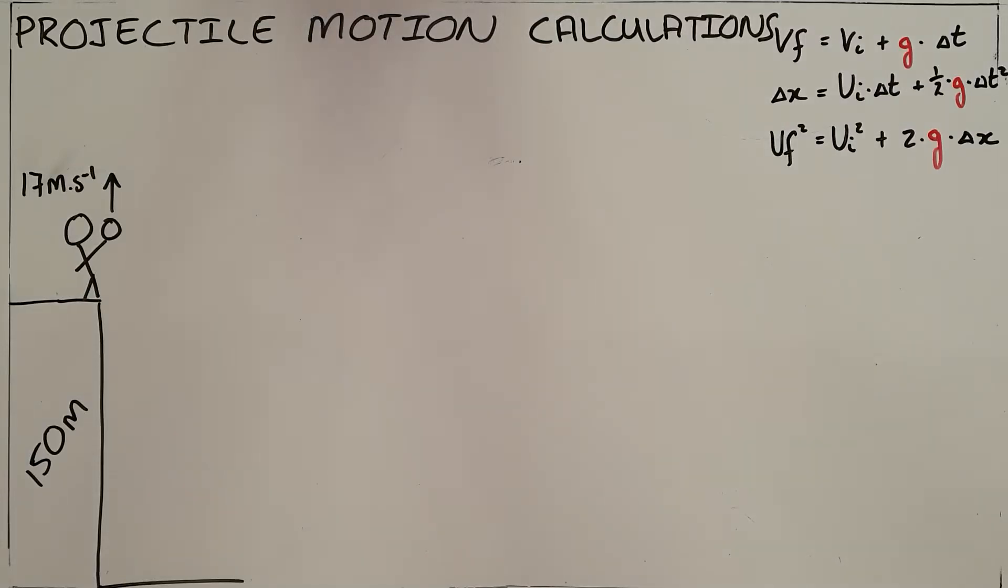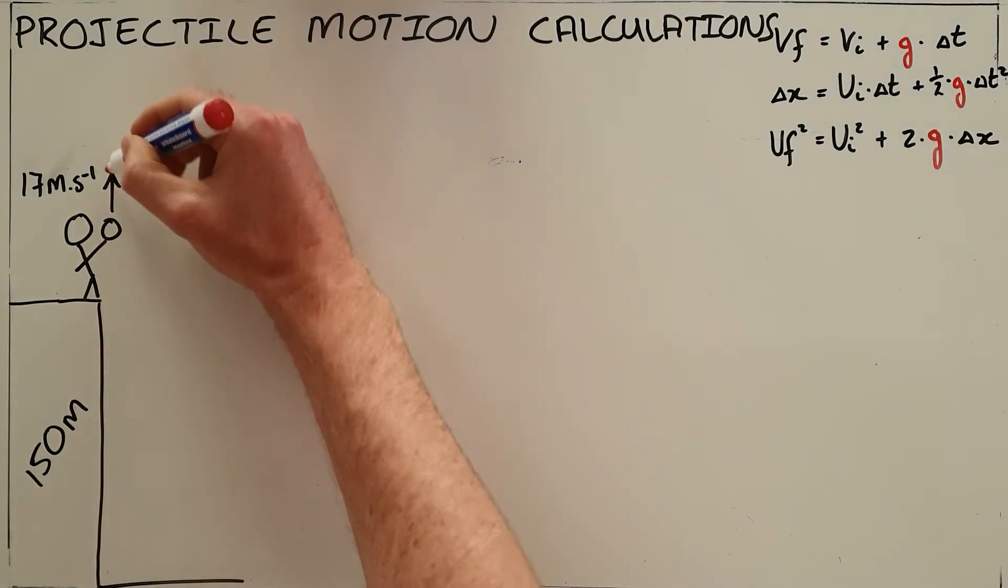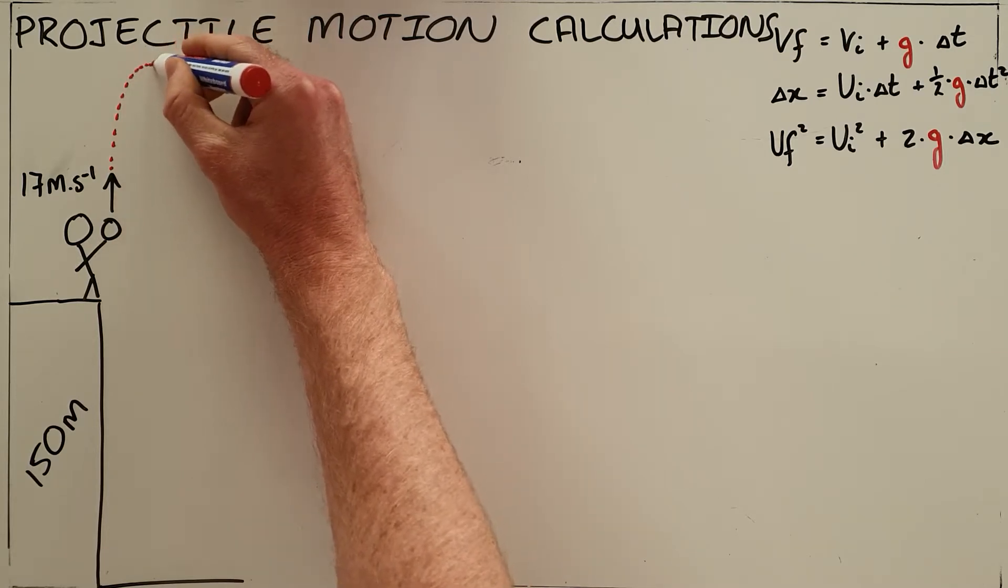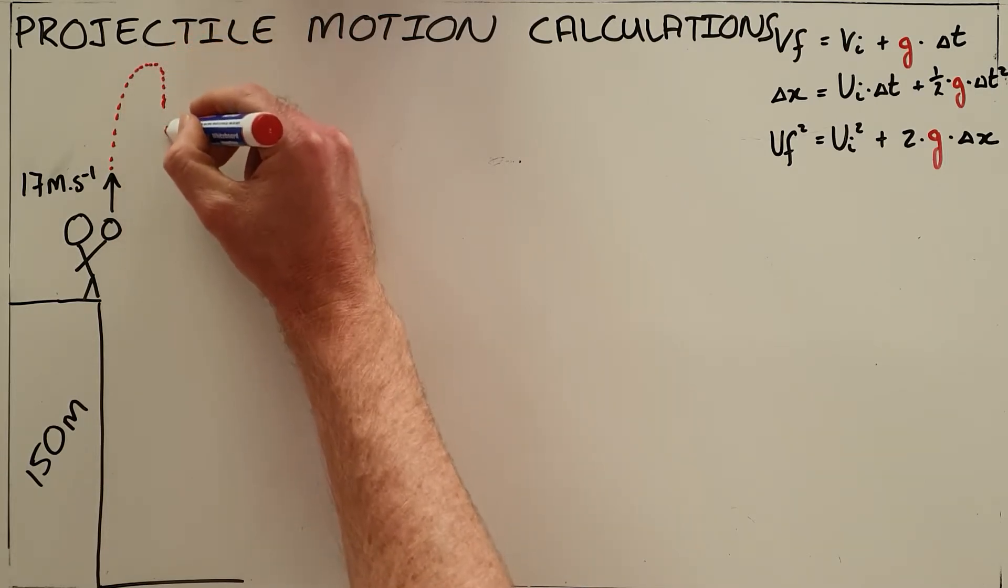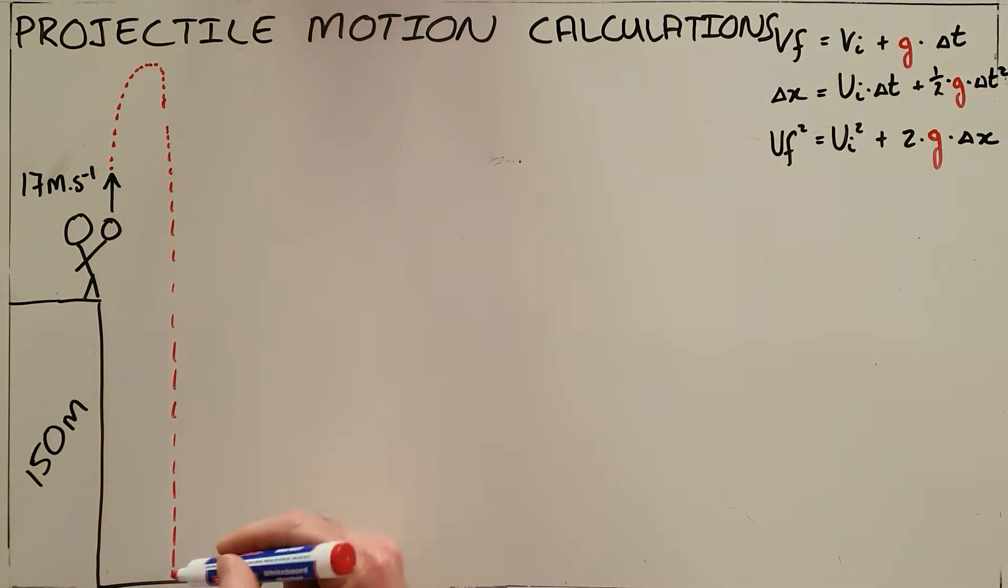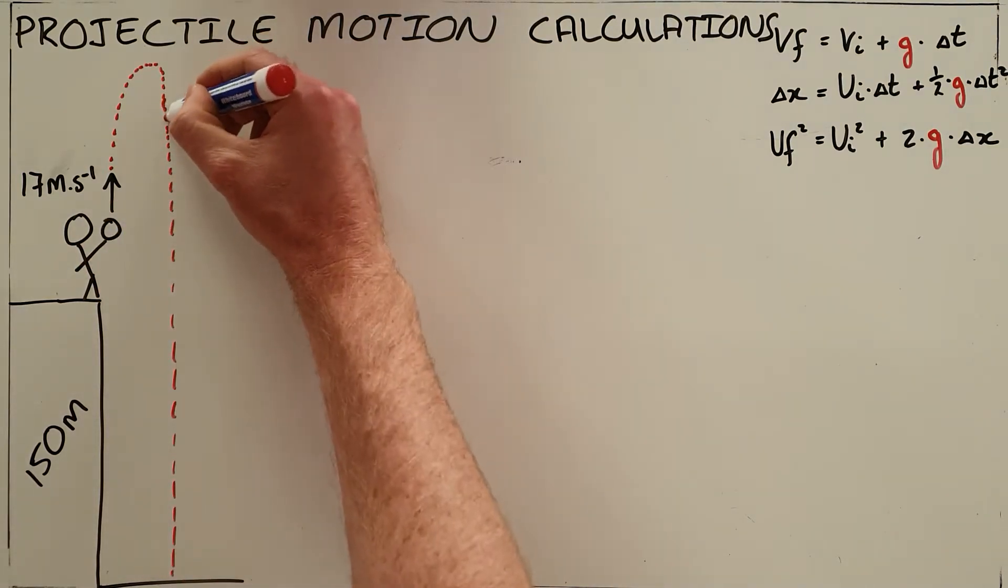The most common projectile motion problem is one in which an object is launched from a certain height above the ground. That object would then travel until reaching some maximum height, at which point it would start to fall downward until hitting the ground below the point where it started from.